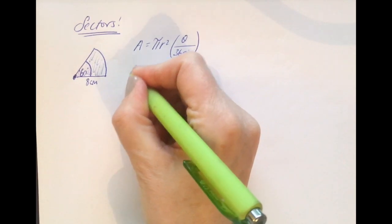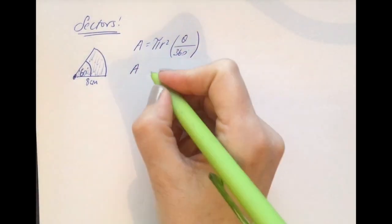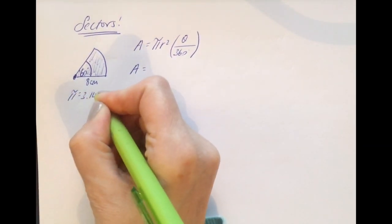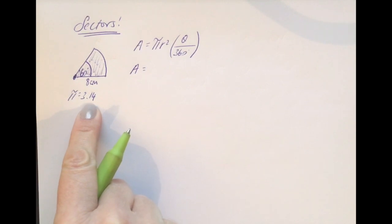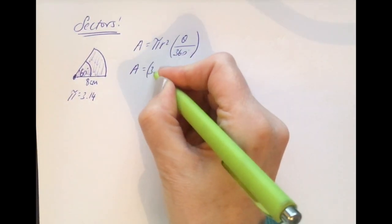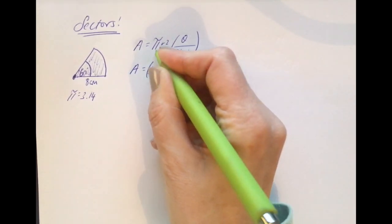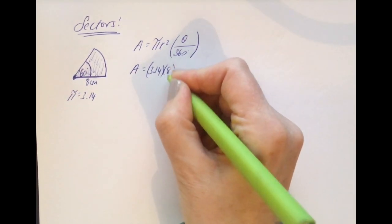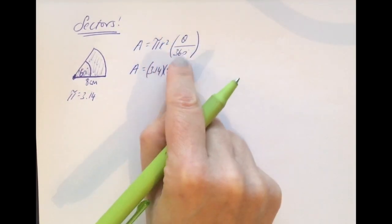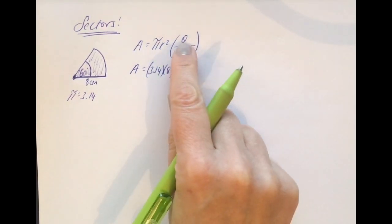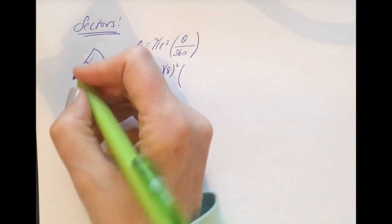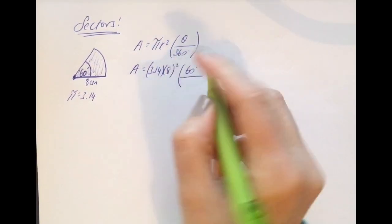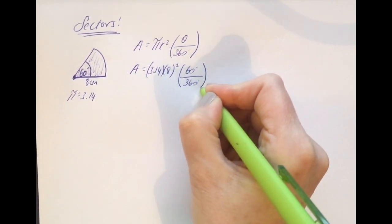We're looking for the area, so obviously I can't fill in anything for A. We will take pi as 3.14 in this example. Again, look very closely in the question to see what they want you to take pi as. The radius is quite clearly 8, so sub in 8, don't forget to square it. Follow that formula exactly, open the bracket again, and then this is the angle, and the angle quite clearly here is 60 degrees, so put 60 degrees in there over 360 and close the bracket.